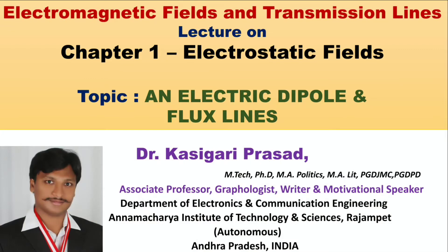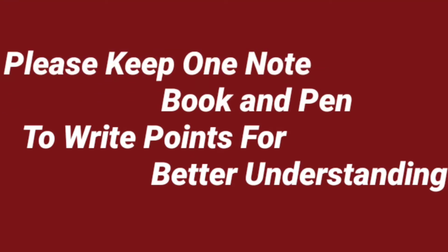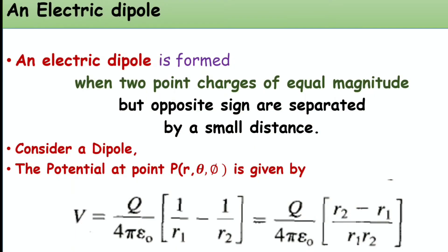Good morning everyone. In our previous topic we discussed electric potential. Now in this topic we will discuss an electric dipole and flux lines — how an electric dipole is formed, what flux lines are, and how they radiate. An electric dipole is formed when two point charges of equal magnitude but opposite sign are separated by a small distance. If charges q1 and q2 have equal magnitude but opposite sign, that means plus q and minus q separated by a small distance, that formation is treated as an electric dipole.